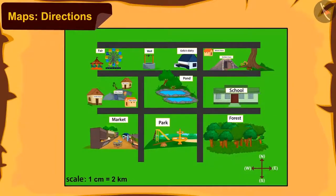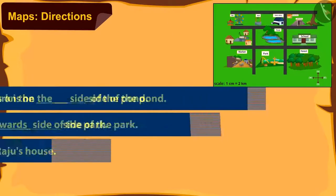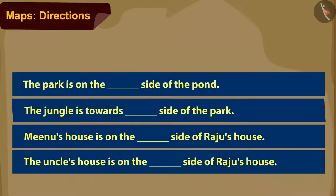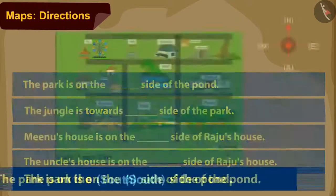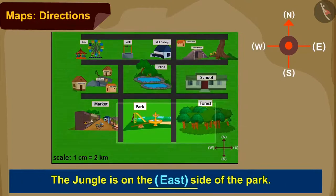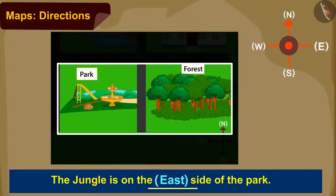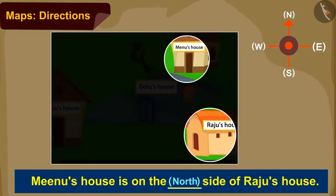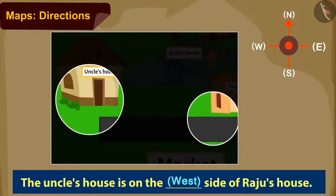Kids, can you make use of the compass to complete the table? You can pause the video to find the answer. Very nice kids. You have answered all of them absolutely right. Park is towards south of the pond. Jungle is towards east of the park. Minu's house is in the north of Raju's house. And Uncle's house is on the west of Raju's house.